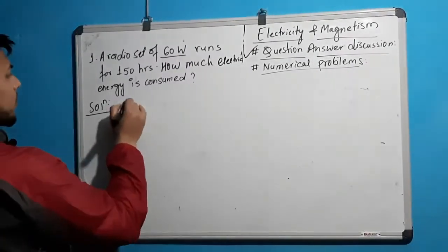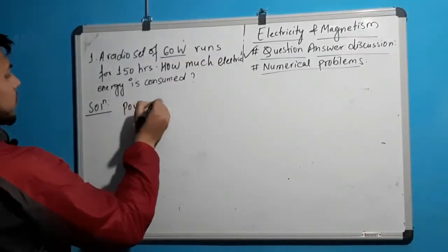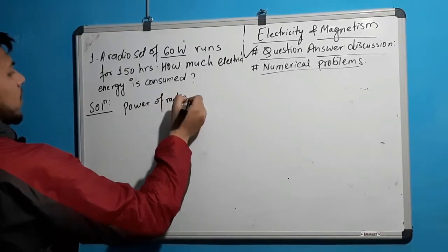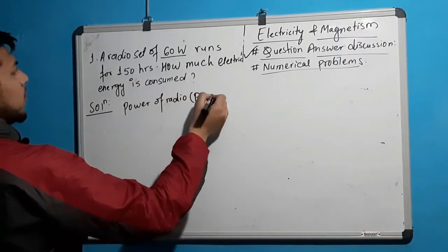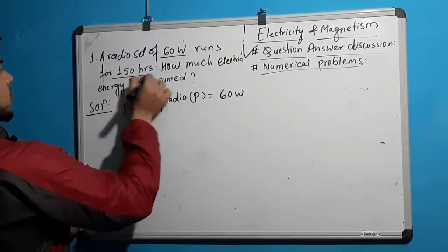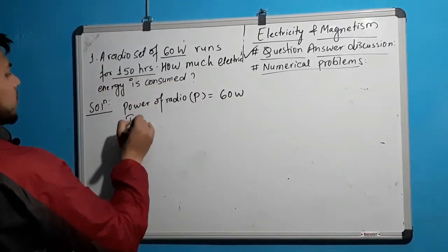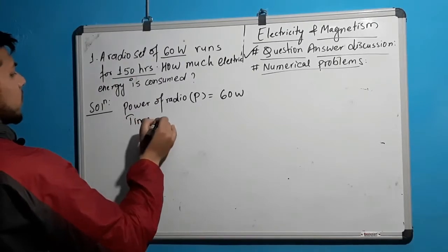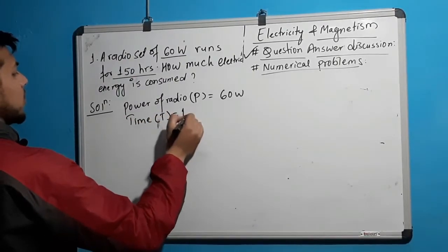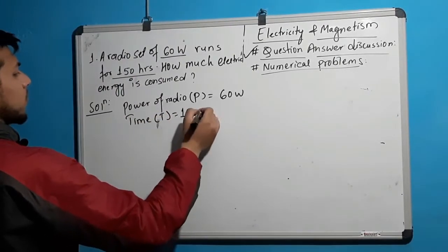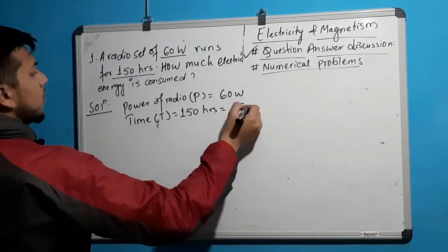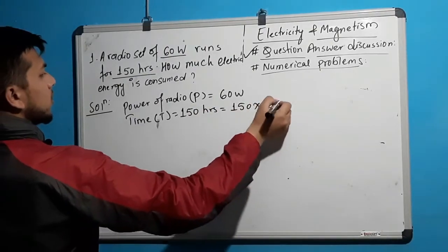The power of the radio is P equal to 60W. The time is T equal to 150 hours. We have to convert this into seconds: T equals 150 into 60 into 60.